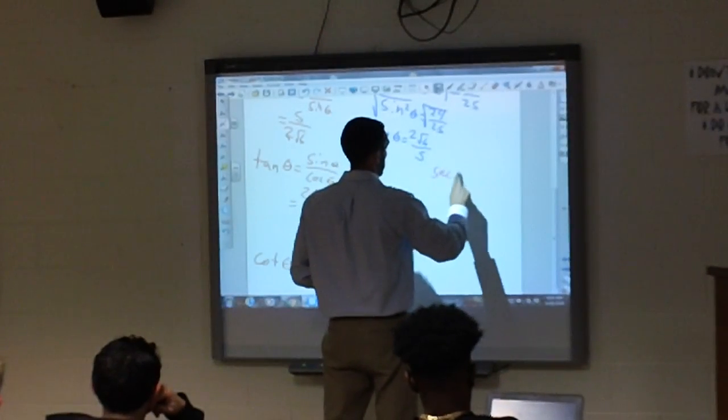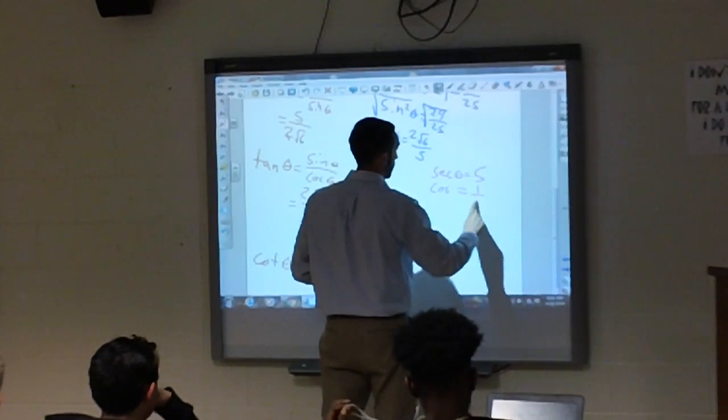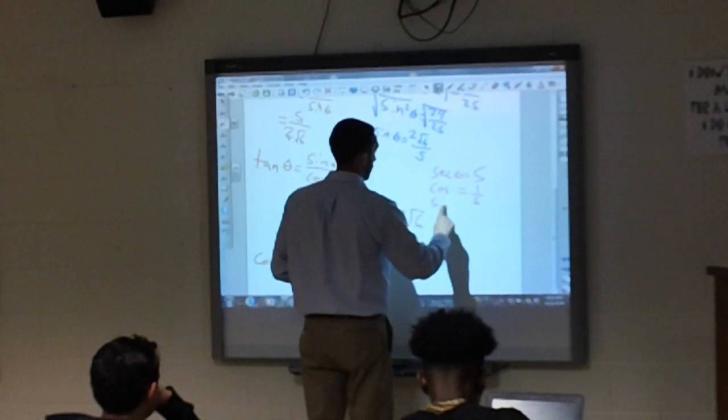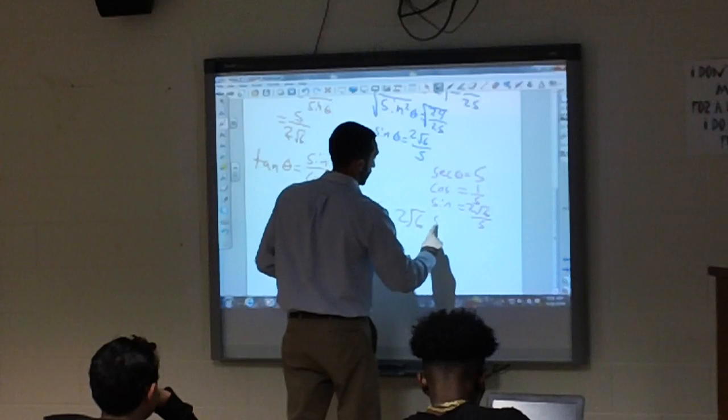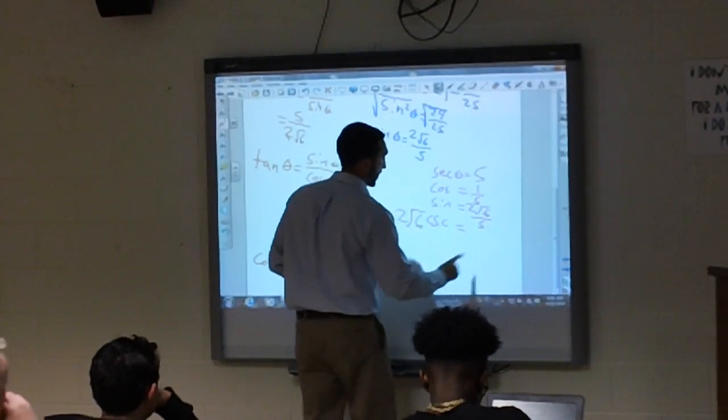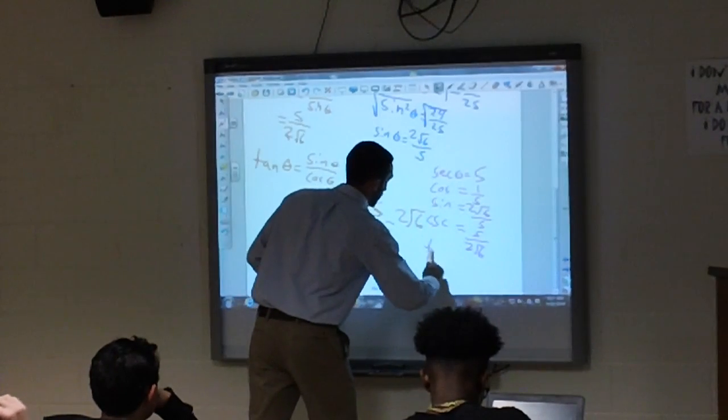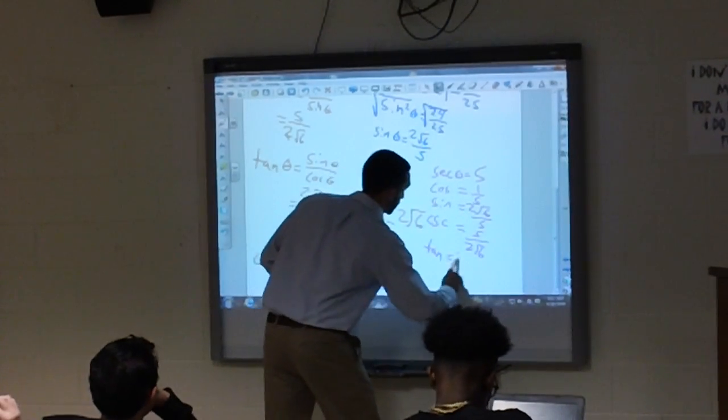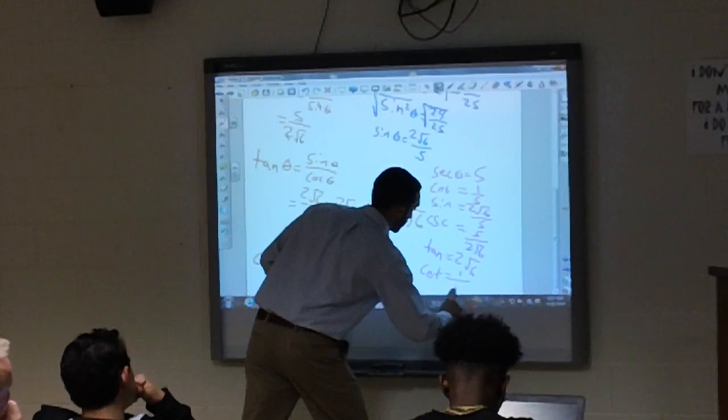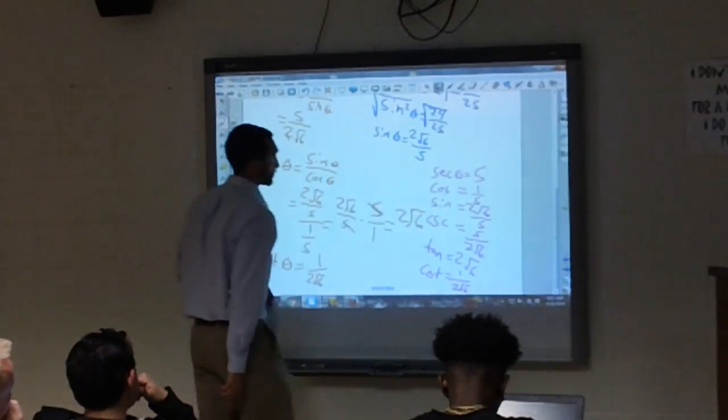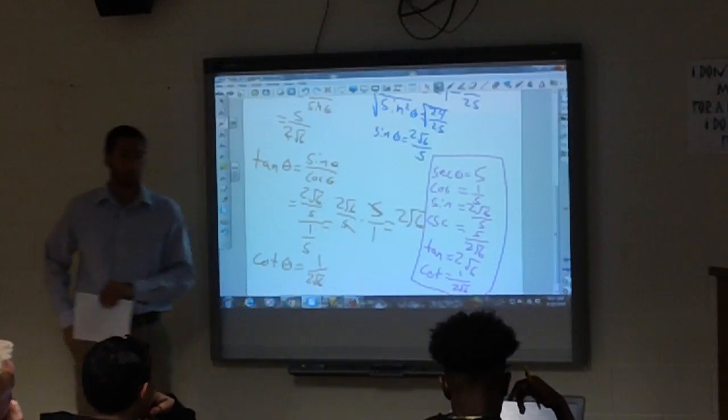They gave me secant. It was 5. So cosine we found to be 1 fifth. Sine we found to be 2 radical 6 over 5. Cosecant we found to be 5 over 2 radical 6. Tangent we found to be 2 radical 6. And cotangent we found to be 1 over 2 radical 6. The six trig functions.